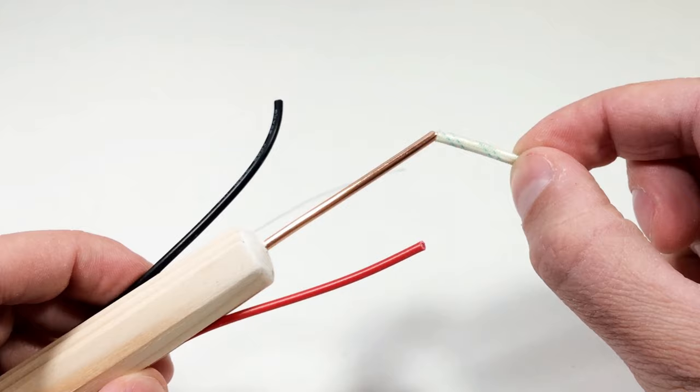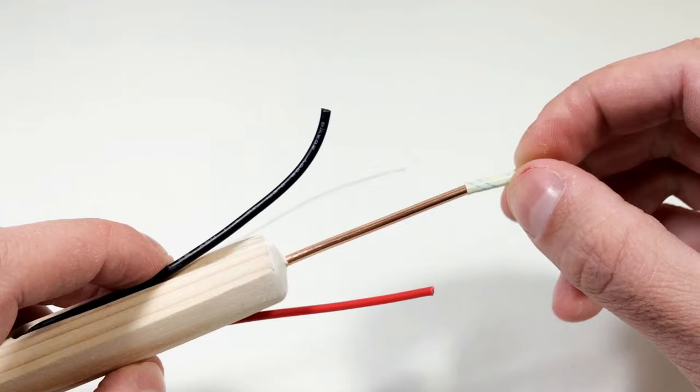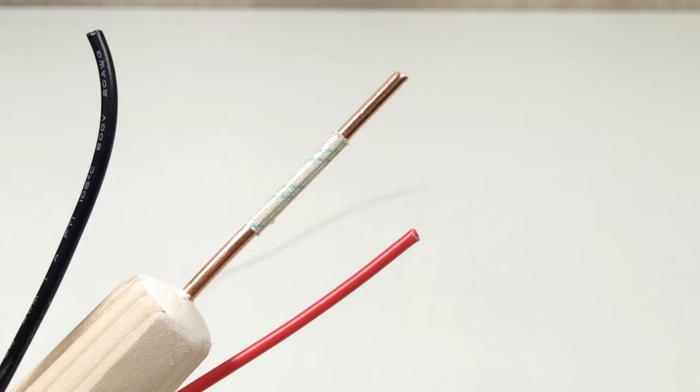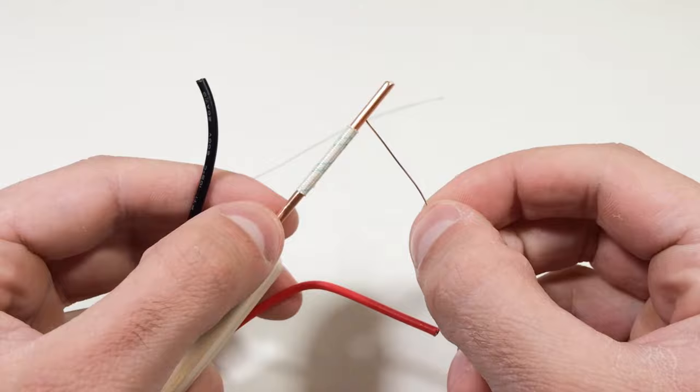Next, we need fiberglass insulation for wires. This insulation we put on a soldering iron tip. Now we fix the insulation using copper wire.